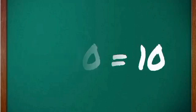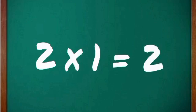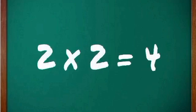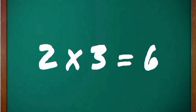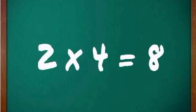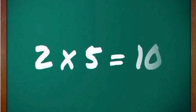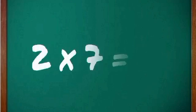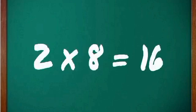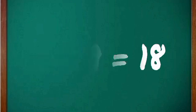Okay, now 2. 2 one's a 2, 2 two's a 4, 2 three's a 6, 2 four's a 8, 2 five's a 10, 2 six's a 12, 2 seven's a 14, 2 eight's a 16, 2 nine's a 18.